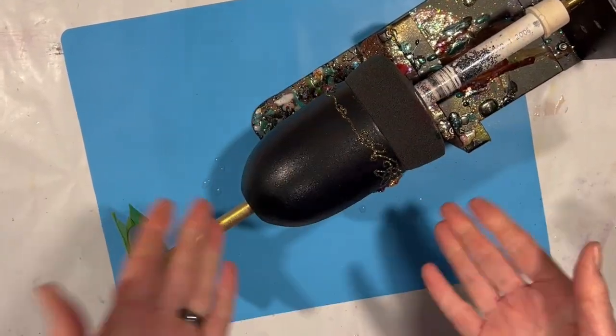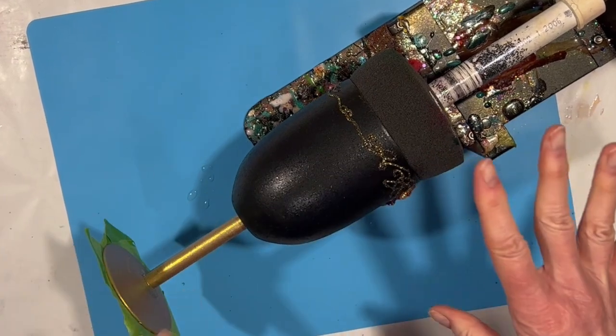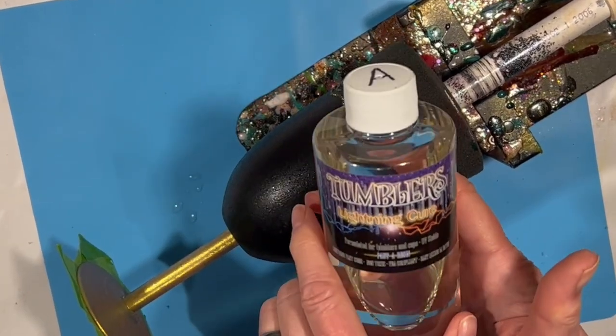And we're back. Okay, this is dried. I'm going to get some epoxy resin on this now. I am going to use Tumbler's Lightning Cure.